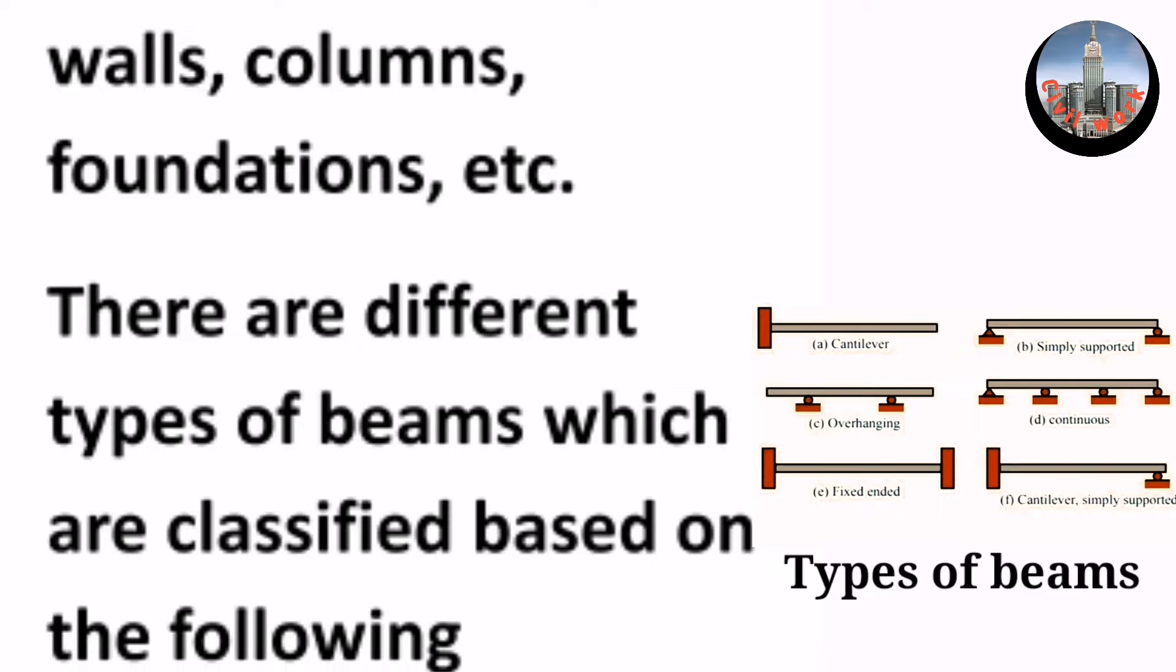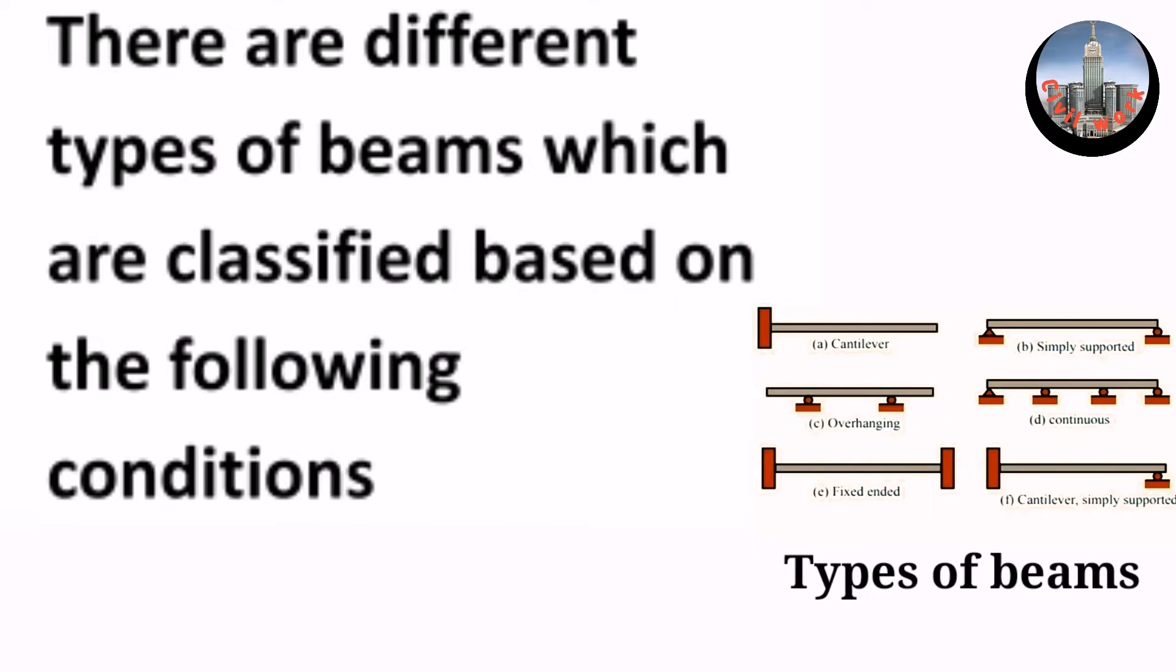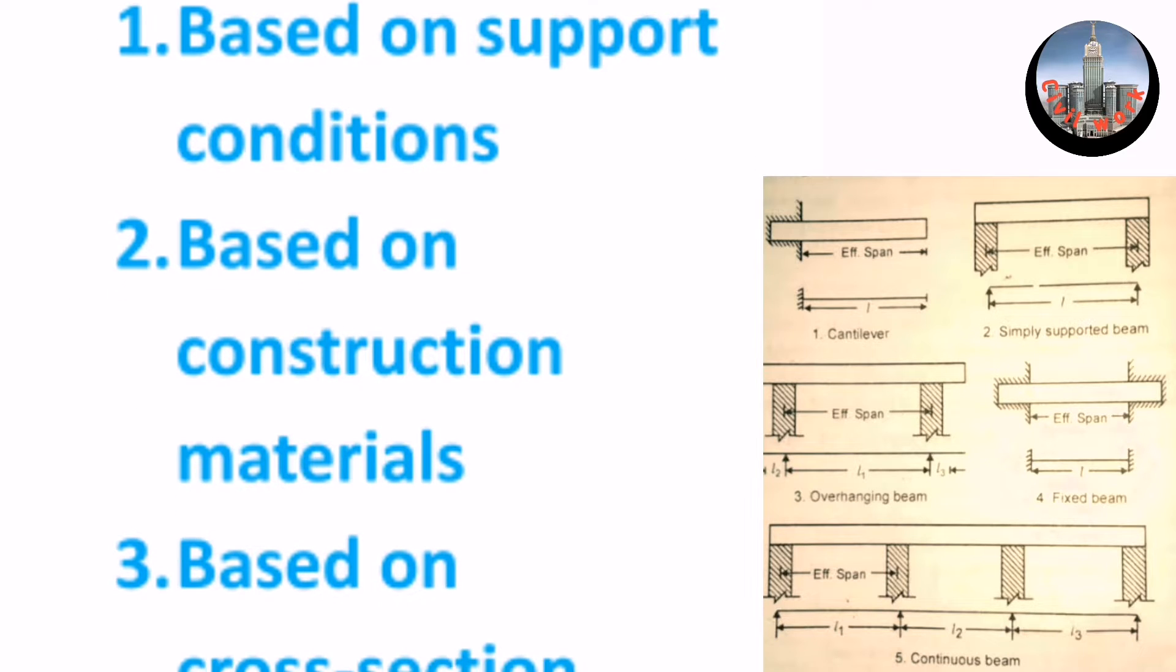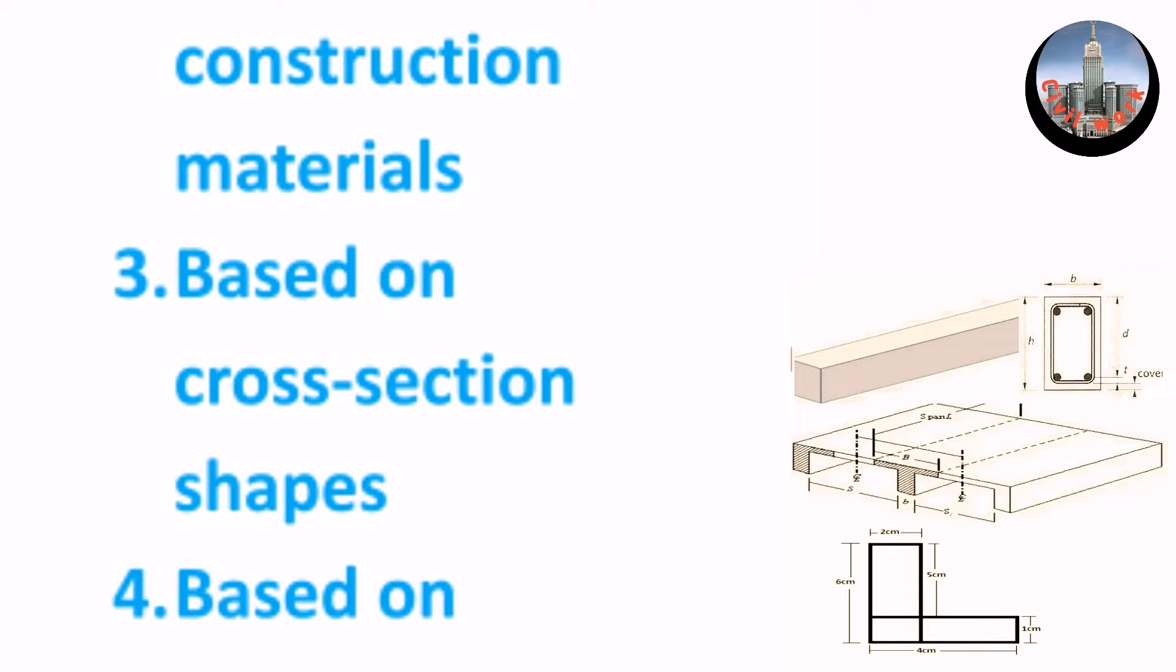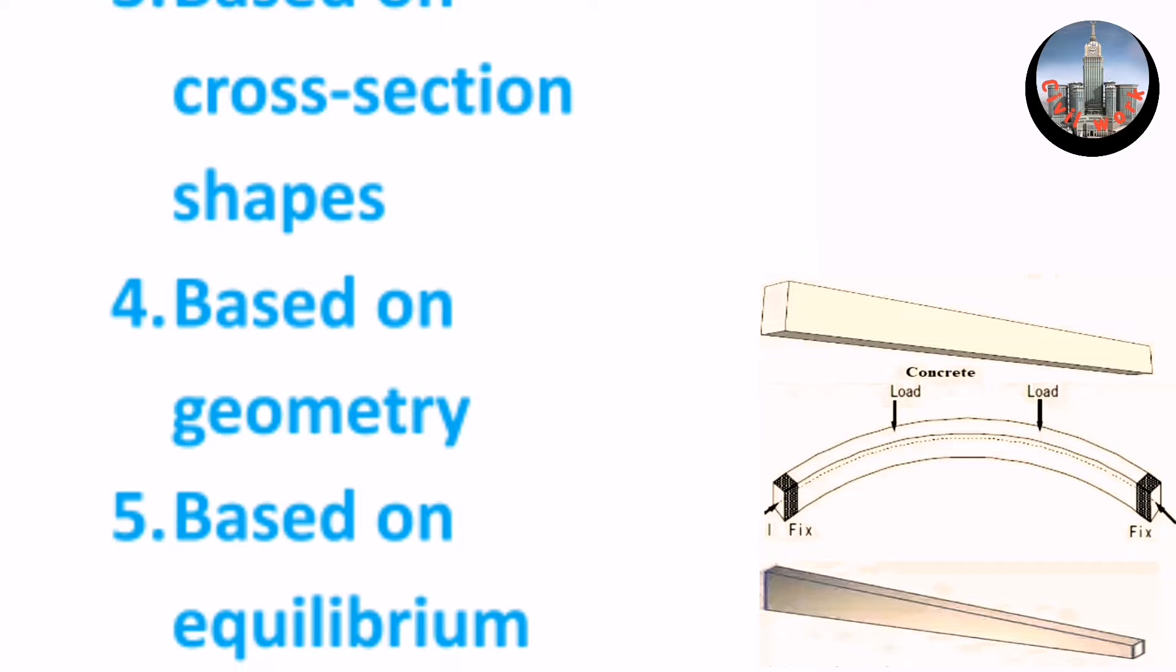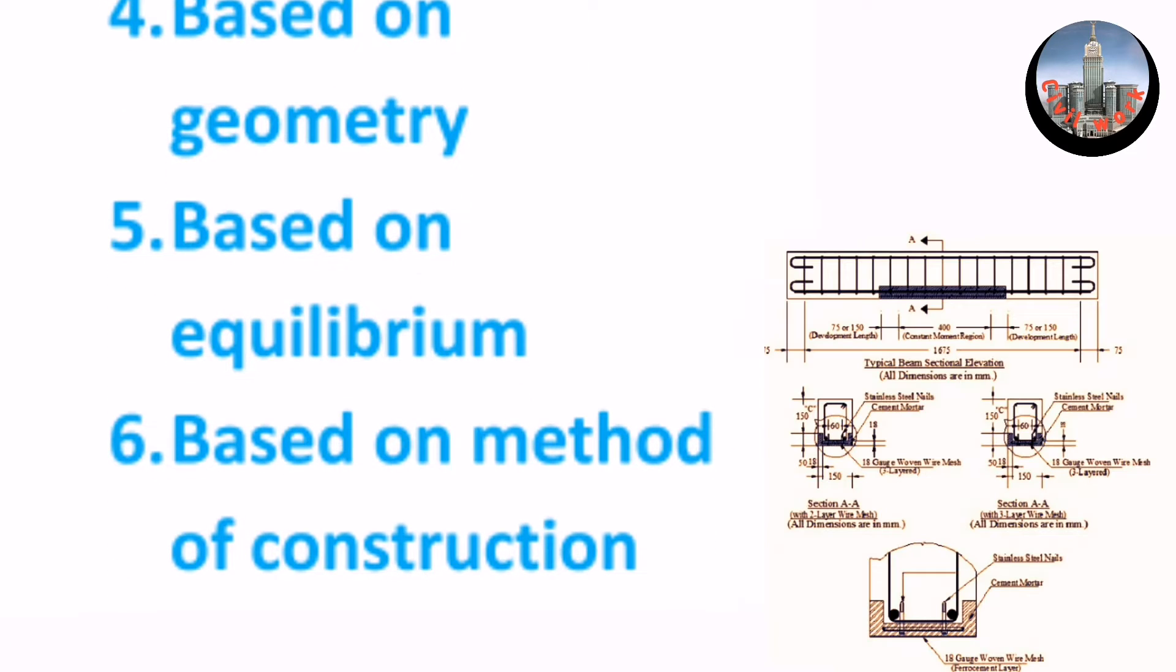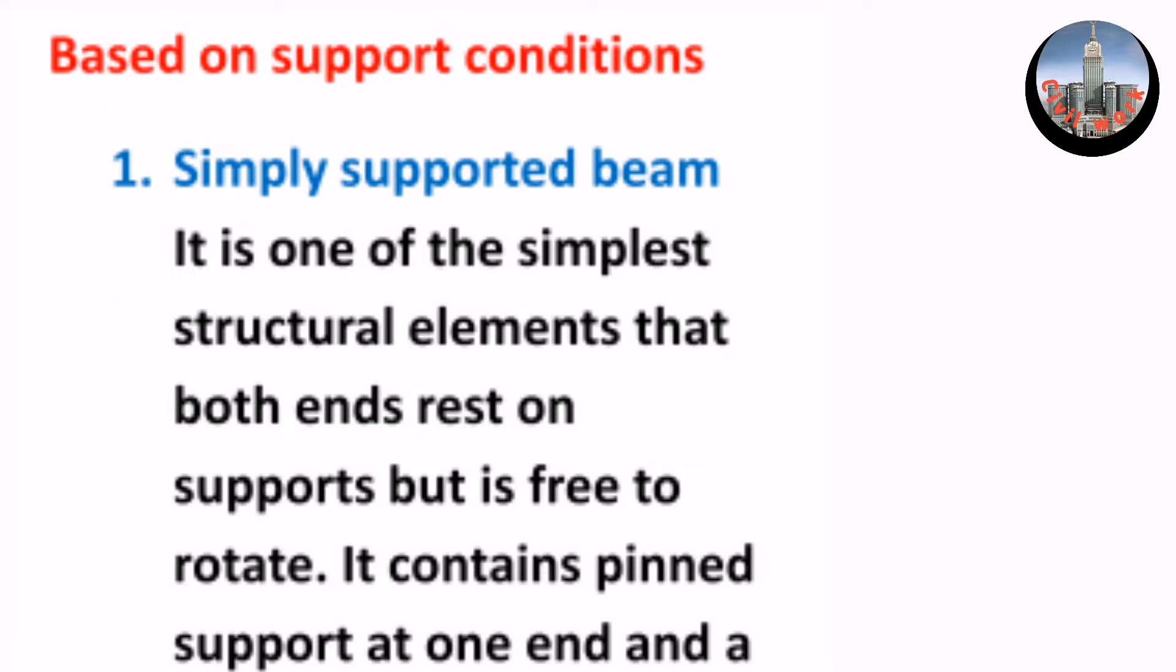There are different types of beams which are classified based on the following conditions: 1. Based on support conditions, 2. Based on construction materials, 3. Based on cross section shapes, 4. Based on geometry, 5. Based on equilibrium, 6. Based on method of construction.